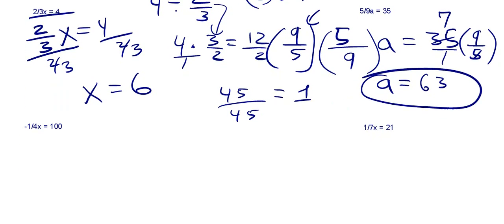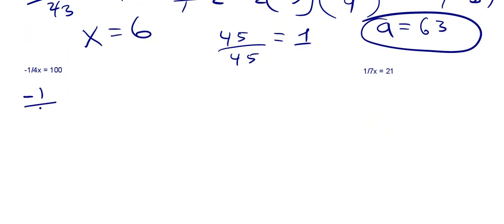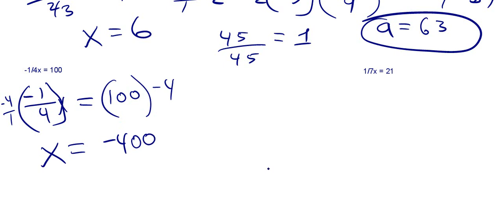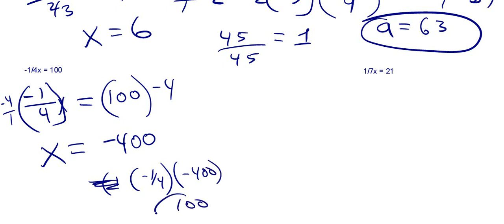Here's another example. We've got negative one-fourth x is equal to 100. We want this x to be 1, so let's multiply by its reciprocal, which would be negative 4 over 1 — or just negative 4. This becomes x, and that's equal to negative 400. This makes sense, because negative one-fourth times negative 400 gives you a positive 100.